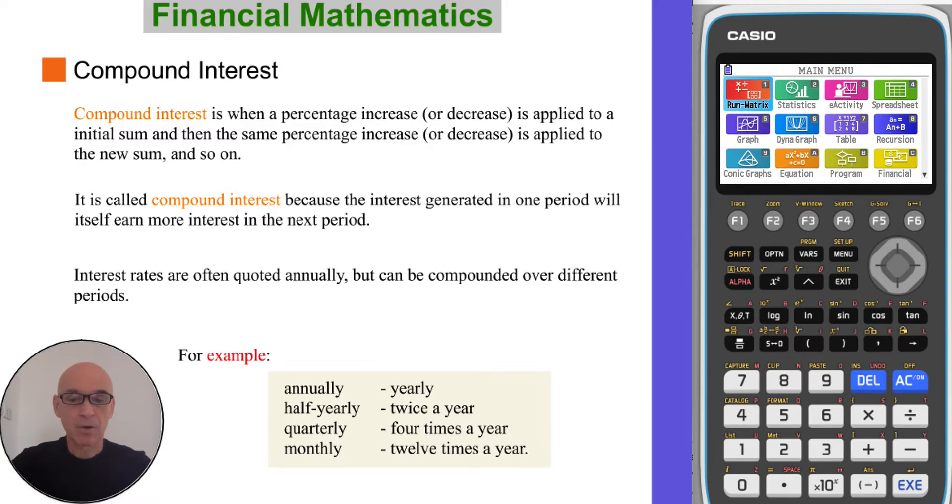Interest rates are often quoted annually but can be compounded over different periods. For example, half yearly, quarterly or even monthly.